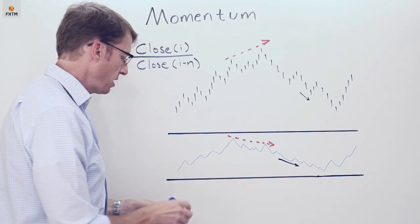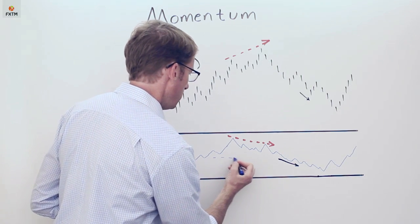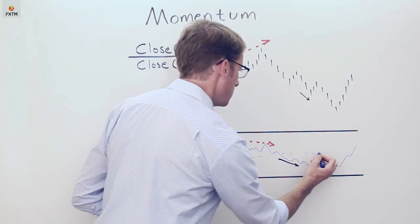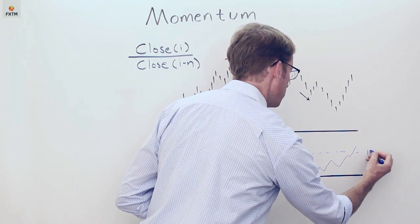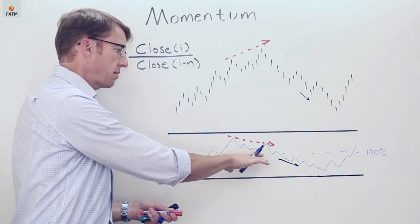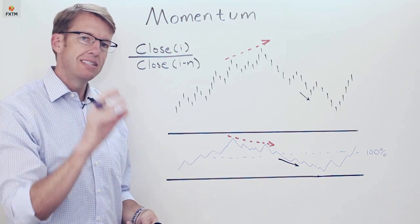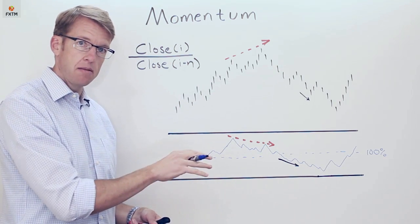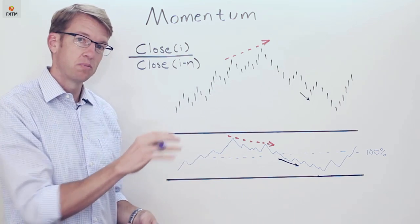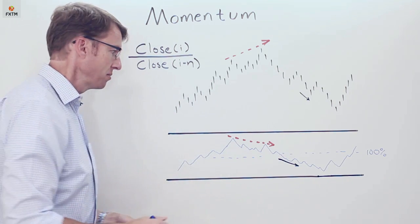Now the momentum oscillator does have a midpoint that runs through the middle of its range and that's 100. What that means is that anytime the oscillator is exactly in the middle then you know that the close price today is the same as the close price or 100% of the close price n periods ago or 14 periods ago.